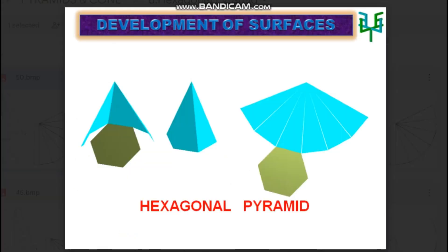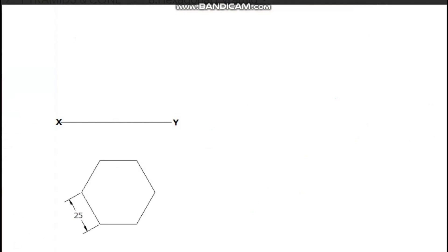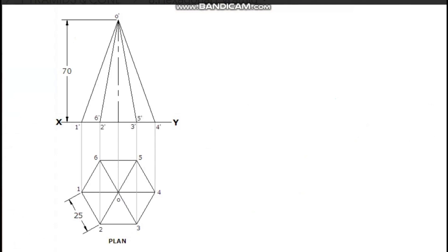Development of hexagonal pyramid. The plan and elevation of the pyramid with the given position are to be drawn first. Measure the length of the slant edge from the elevation. In this given position, the slant edge 4-0 in the plan is parallel to the XY line, so the corresponding line for 4-0 in the elevation has true length.